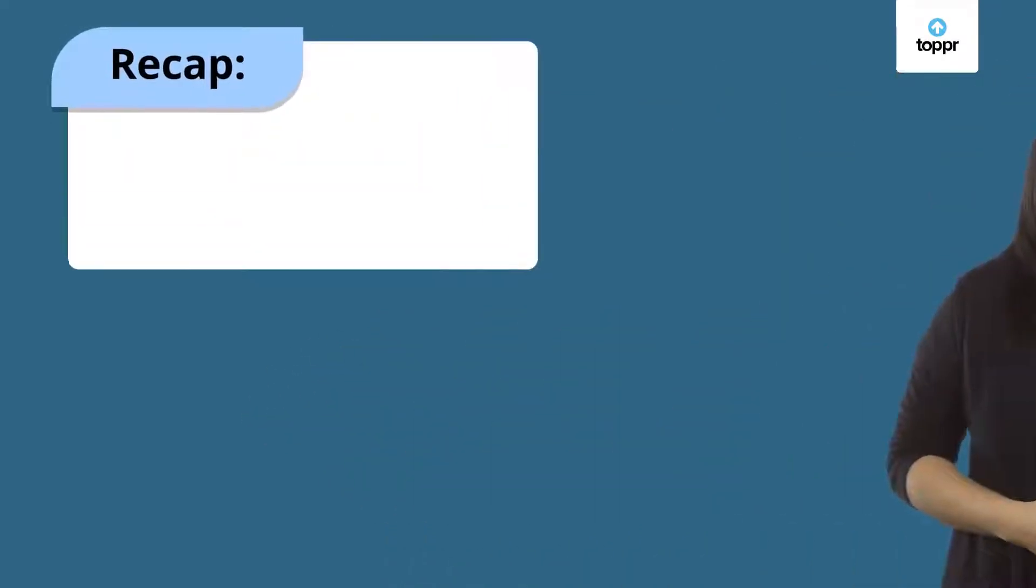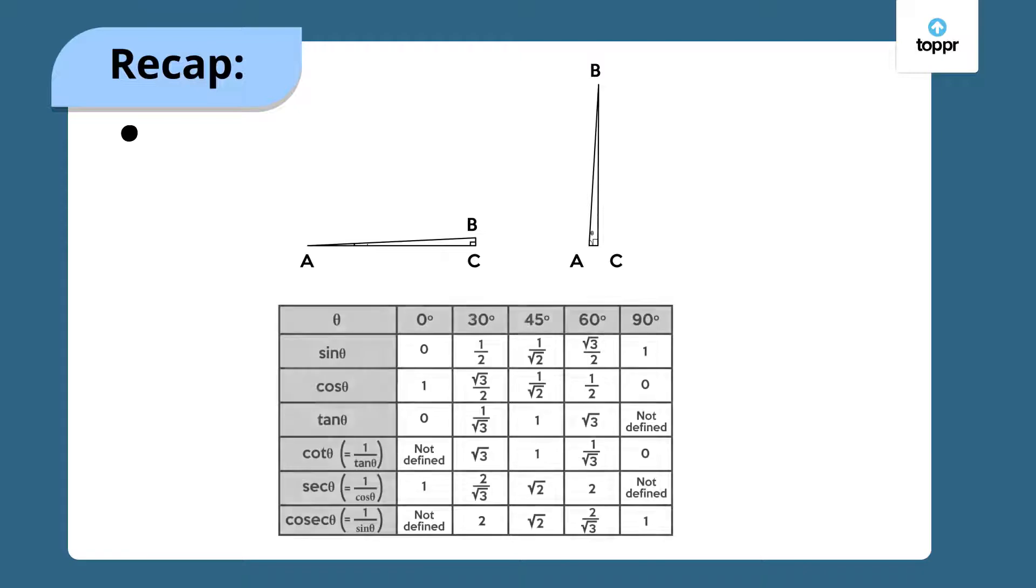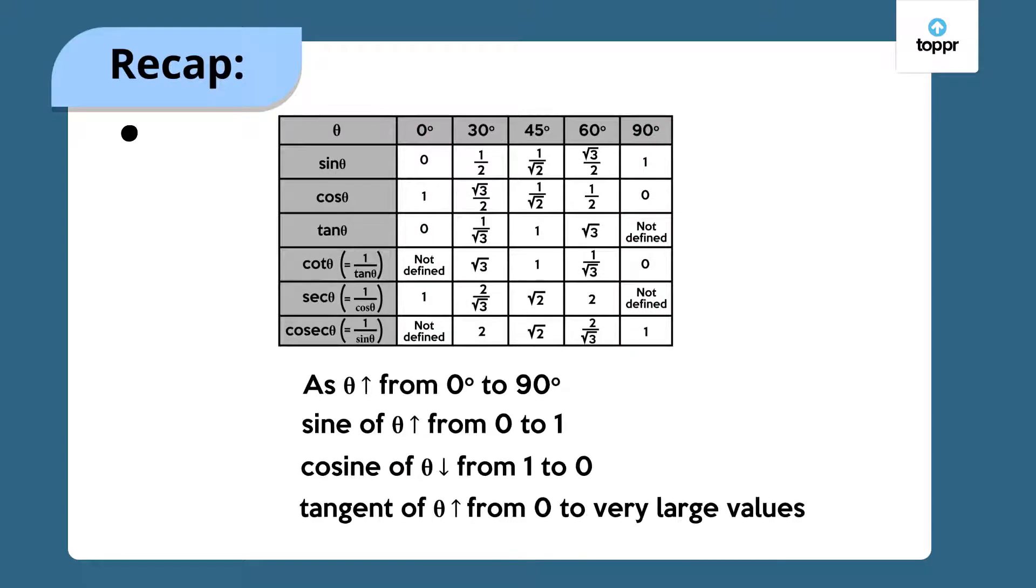Let's do a quick recap of what we've learned so far. We observed how the trigonometric ratios behave for the acute angles close to 0 and 90 degrees. Using what we observed, we defined the values of the trigonometric ratios for theta equal to 0 and 90. Finally, we noted how the values of the sine, cosine and tangent vary as theta is varied between 0 and 90 degrees.